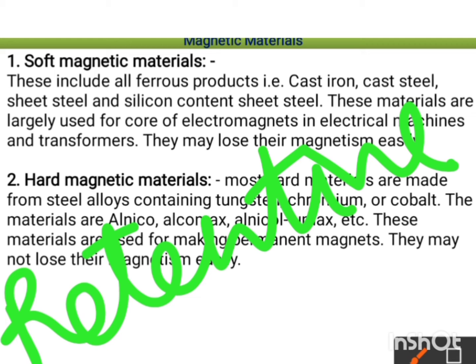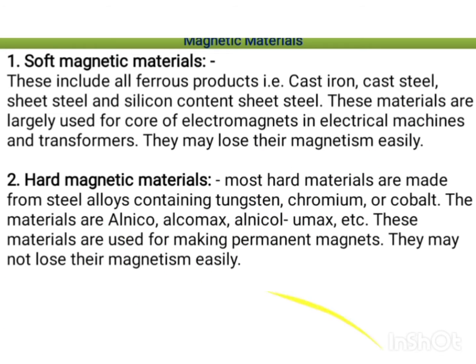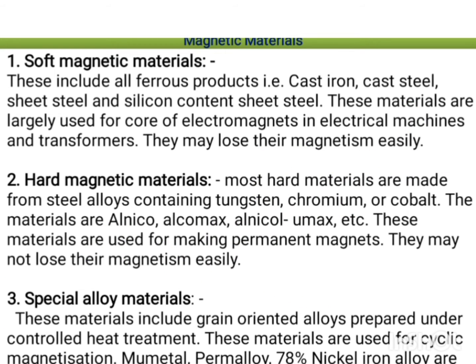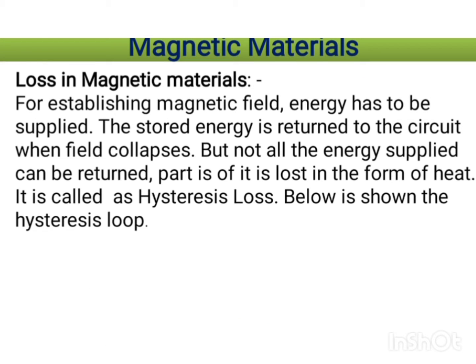Special alloy materials include grain-oriented alloys prepared under controlled heat treatment. These materials are used for cyclic magnetizations. Examples are Momental and Permalloy, which is a 78 percent nickel-iron alloy.